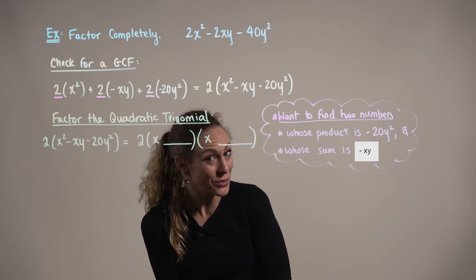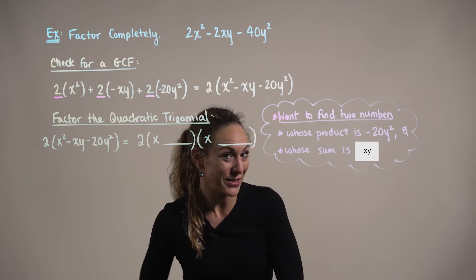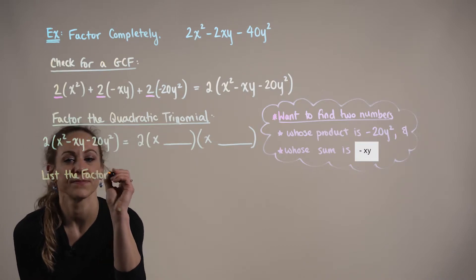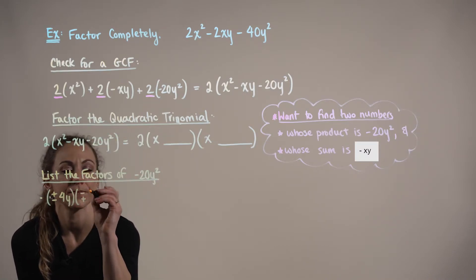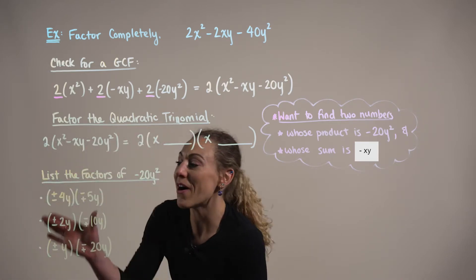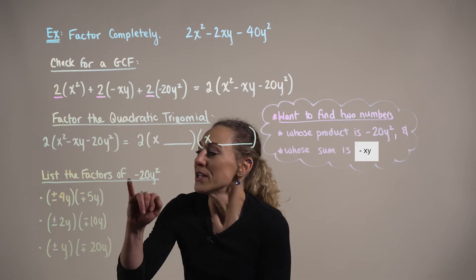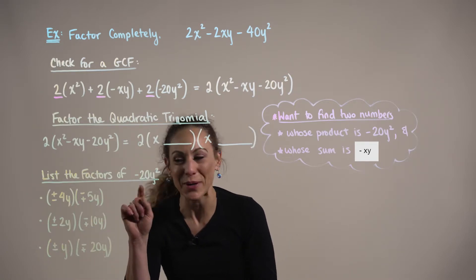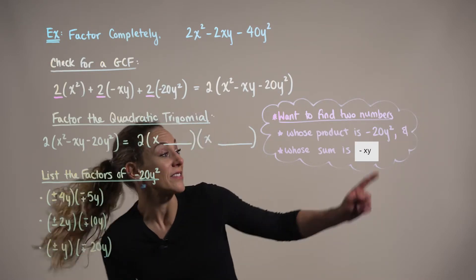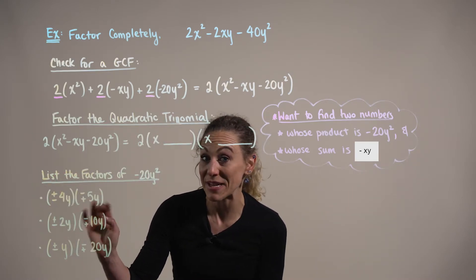To help us find two such numbers, we begin by listing the factors of the constant term minus 20y squared. Since this is a negative and the sum is also negative, we know that one factor must be positive and one must be negative.